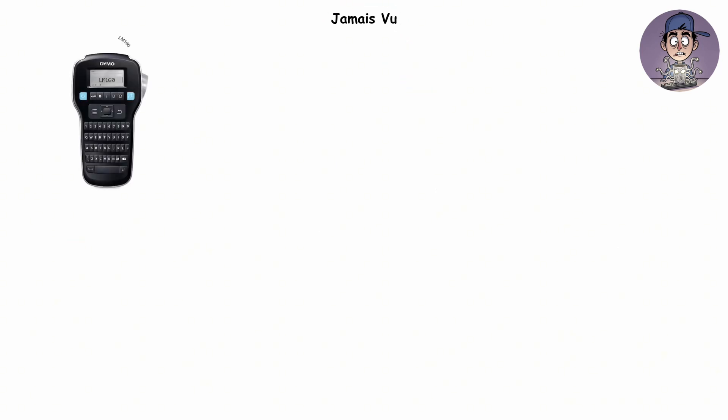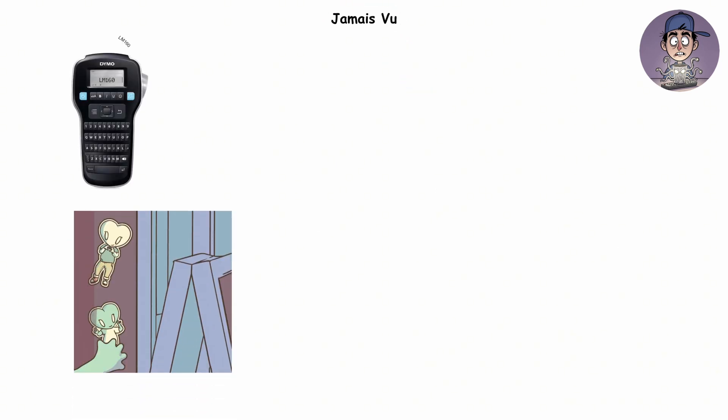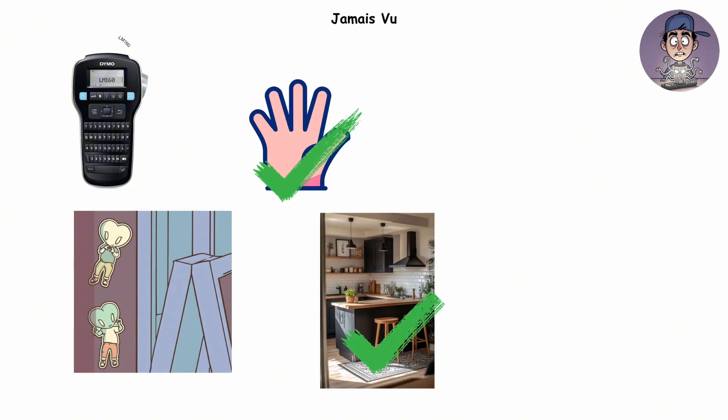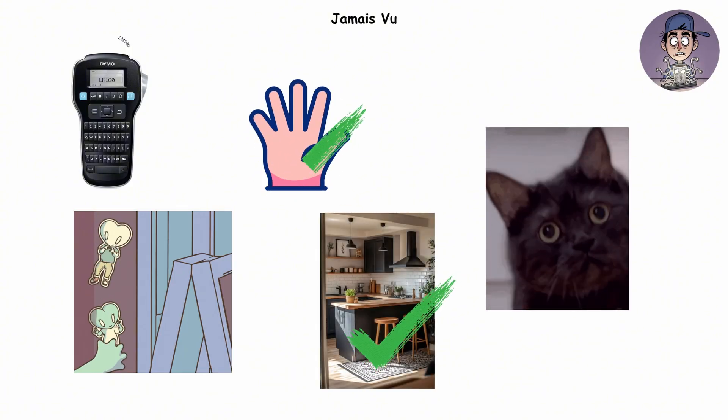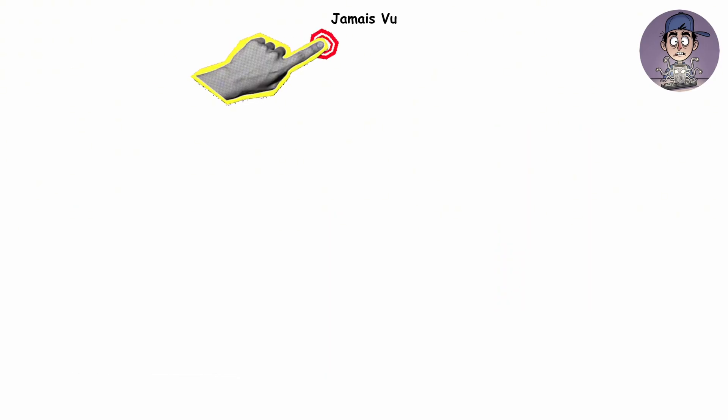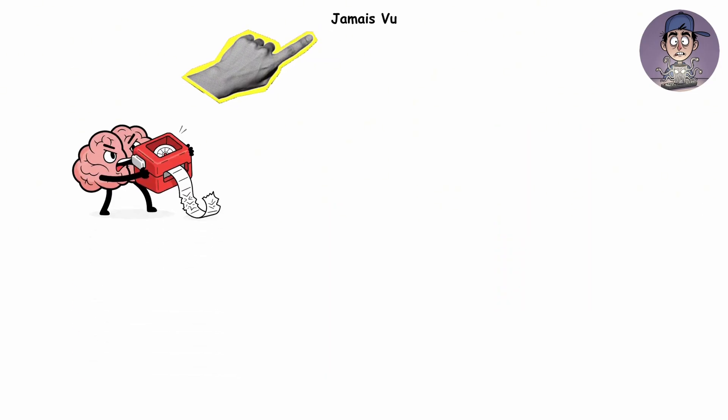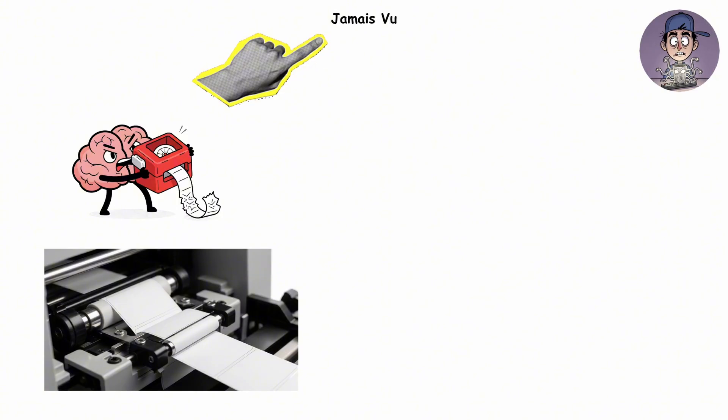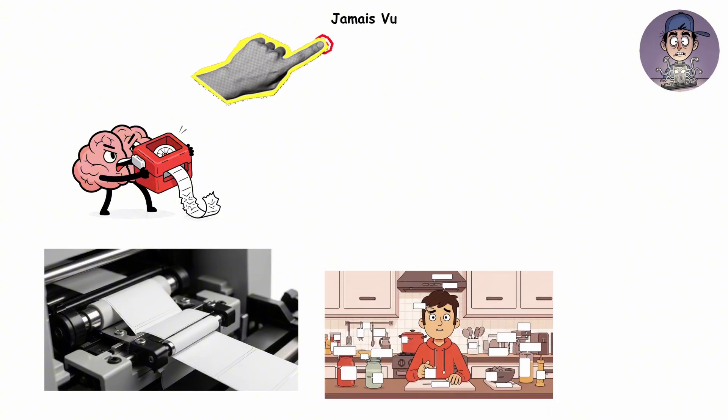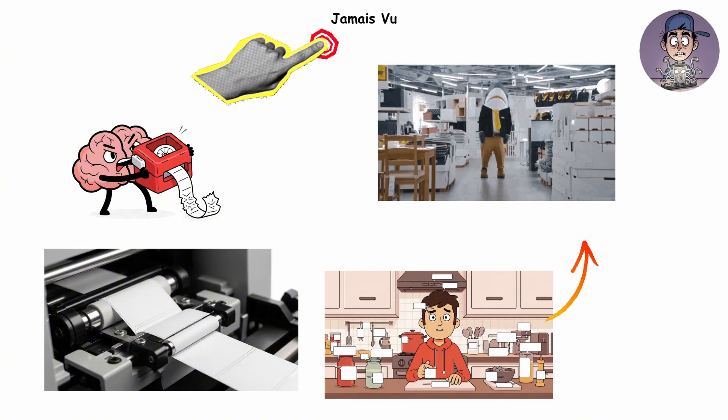Your brain works like a label maker, slapping tags on things instantly. Hand? Labeled. Kitchen? Labeled. Cat staring at you? Definitely labeled. But in a jamais vu moment, the mental label maker jams. The tag doesn't come out, and suddenly your perfectly normal kitchen feels like you've wandered into an Ikea showroom you can't afford.